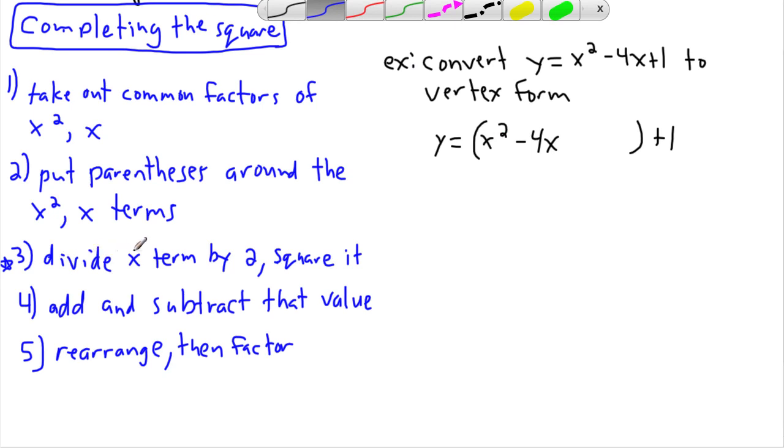So the next step says to divide the x term by 2. So I'm going to do that right now. So negative 4, this is the x term so to speak. So I'm going to divide that by 2. So negative 4 divided by 2, that gives me negative 2. Now I'm going to take that number and square it. So squaring negative 2, so negative 2 times negative 2 gives me 4. Okay so now I've found that value, so I'm finished this.